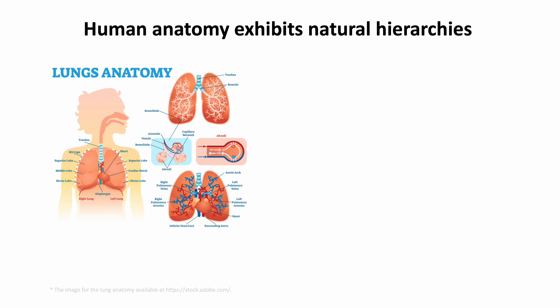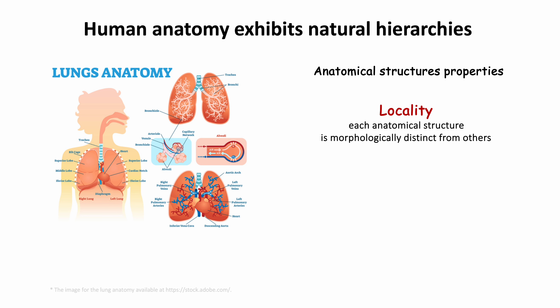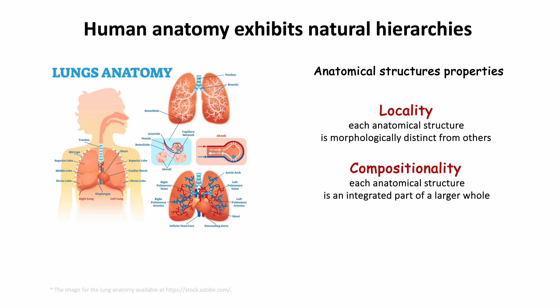Human anatomy exhibits natural hierarchies. For example, the lung is divided into the right lung and left lung; each lung is divided into lobes — the left lung has two and the right lung has three. The pulmonary arteries, veins, and airways form hierarchical trees. As such, anatomical structures have two important properties: the first is locality — each anatomical structure is morphologically distinct from others — and the second is compositionality — each anatomical structure is an integrated part of a larger whole.